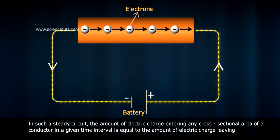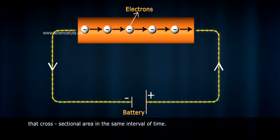In such a steady circuit, the amount of electric charge entering any cross-sectional area of a conductor in a given time interval is equal to the amount of electric charge leaving that cross-sectional area in the same interval of time.